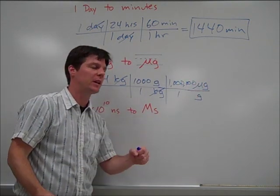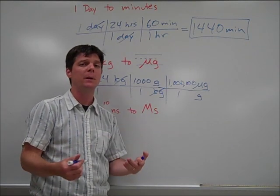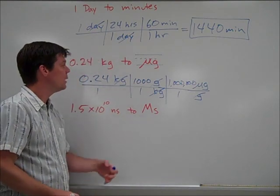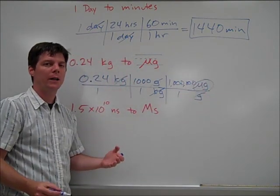So that's 1 followed by 6 zeros. I could also write 1 times 10 to the 6th. I could write 10 to the 6th. They all mean the same thing. So you could write it in any of those ways. Unit of grams cancels. I'm left with the unit of micrograms. That's what I'm trying to convert to.